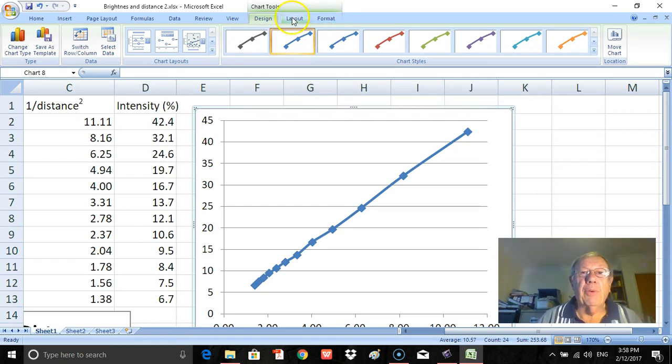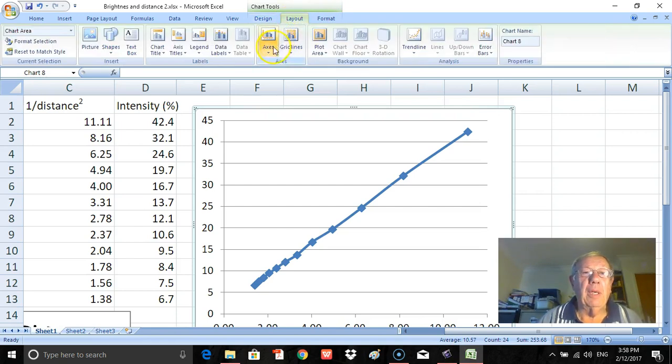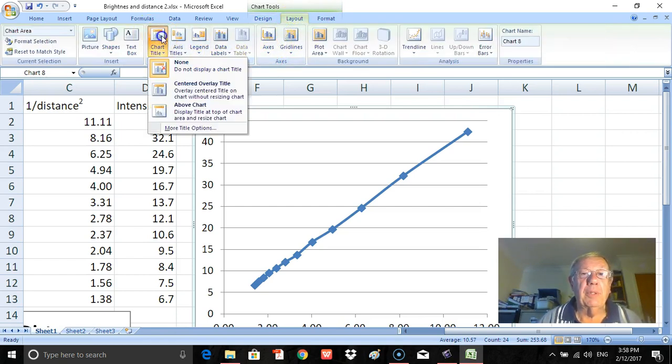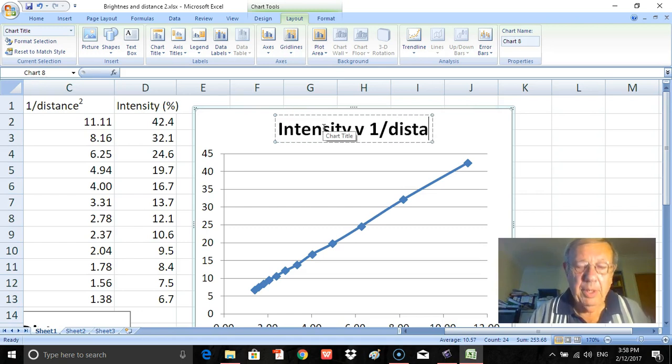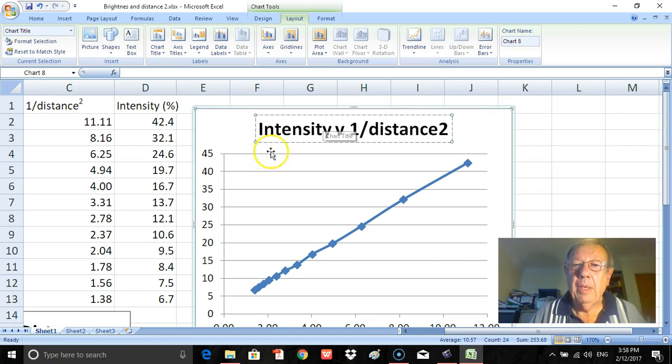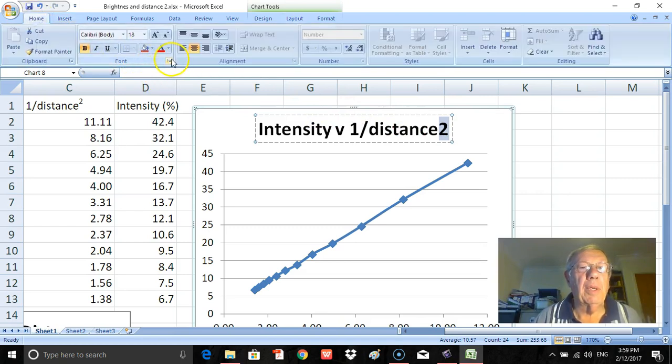And again I need to put in a title, a graph title, axes label, the axes with the units as well. So I click here, and again go over here to chart title, and go down here to above the chart. And it's Intensity v 1/distance². OK, selecting the two, going up here to home, going down here to superscripts, clicking there, going OK.